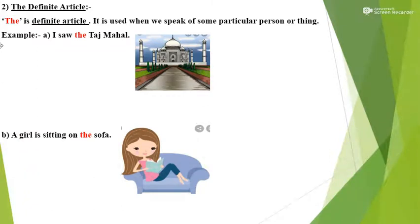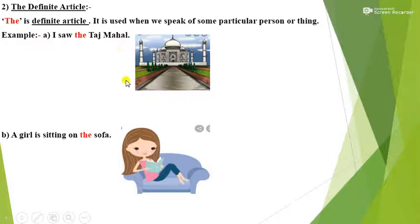Number 2: the definite article. The is the definite article. It is used when we speak of some particular person or thing. Example A: I saw the Taj Mahal. Here I am talking about a particular monument called the Taj Mahal, so that is why I have used the definite article 'the' before Taj Mahal. Example B: A girl is sitting on the sofa. Here I am mentioning about a particular thing — the sofa — where the girl is sitting.